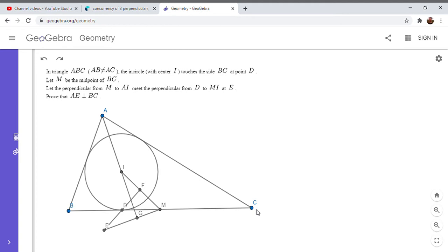So how do we begin here? So with all these perpendiculars, one idea I had in mind was to try to show that D is the orthocenter of some triangle. So I want to show that AE is perpendicular to BC. That would be the same as saying that AE is perpendicular to MD. So maybe I could get D to be the orthocenter of some triangle. We know that AI is perpendicular to ME. And we know that D is perpendicular to MI. So how can I get D as an orthocenter?